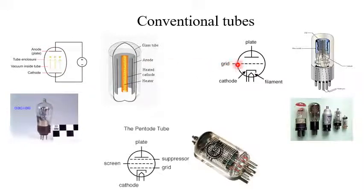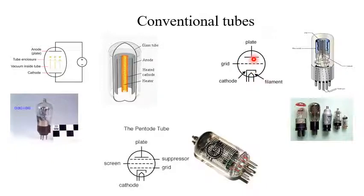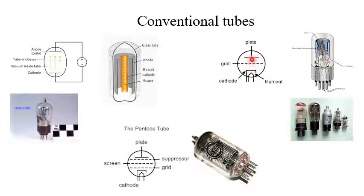Now if we insert some wire mesh between the cathode and the anode, that wire mesh is called the grid, and it becomes a triode valve. In this case, the grid potential will control the flow of electrons from cathode to anode. Being a negative charge, electrons will be repelled or attracted by this grid potential. If the grid potential is negative, some electrons will be repelled back, so the anode plate will receive fewer electrons. In this way, the grid controls the flow of electrons and the current between the cathode and anode plate.